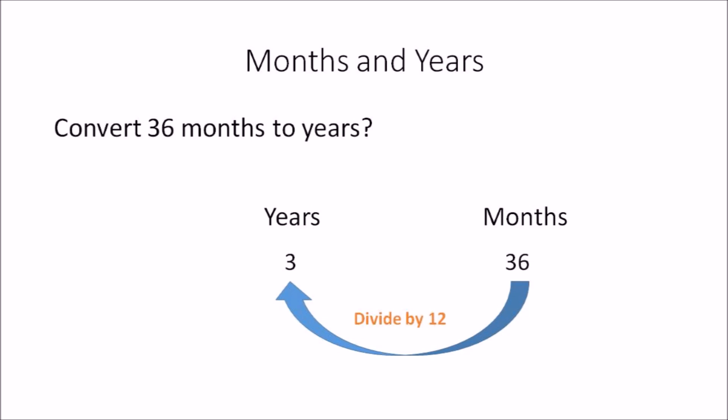In this example, convert 36 months to years. This question is asking you to convert months to years. In order to do that you need to divide the amount you have in months by 12. So 36 months divided by 12 will give you 3, so the answer is 3 years.